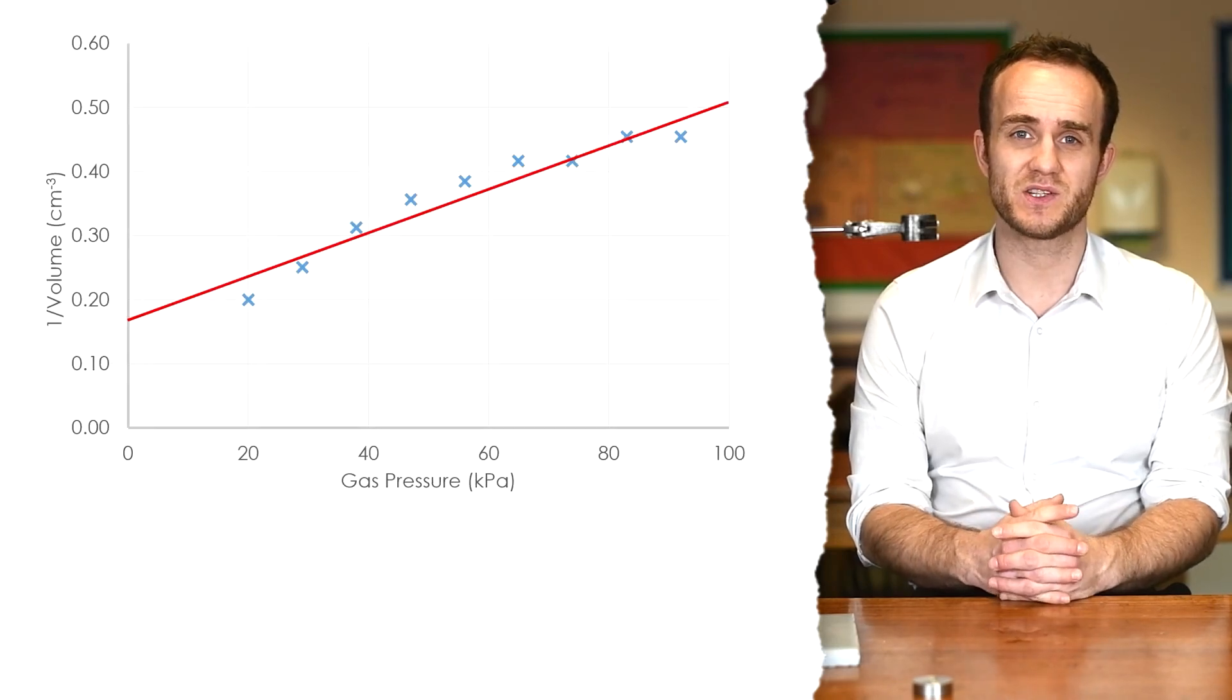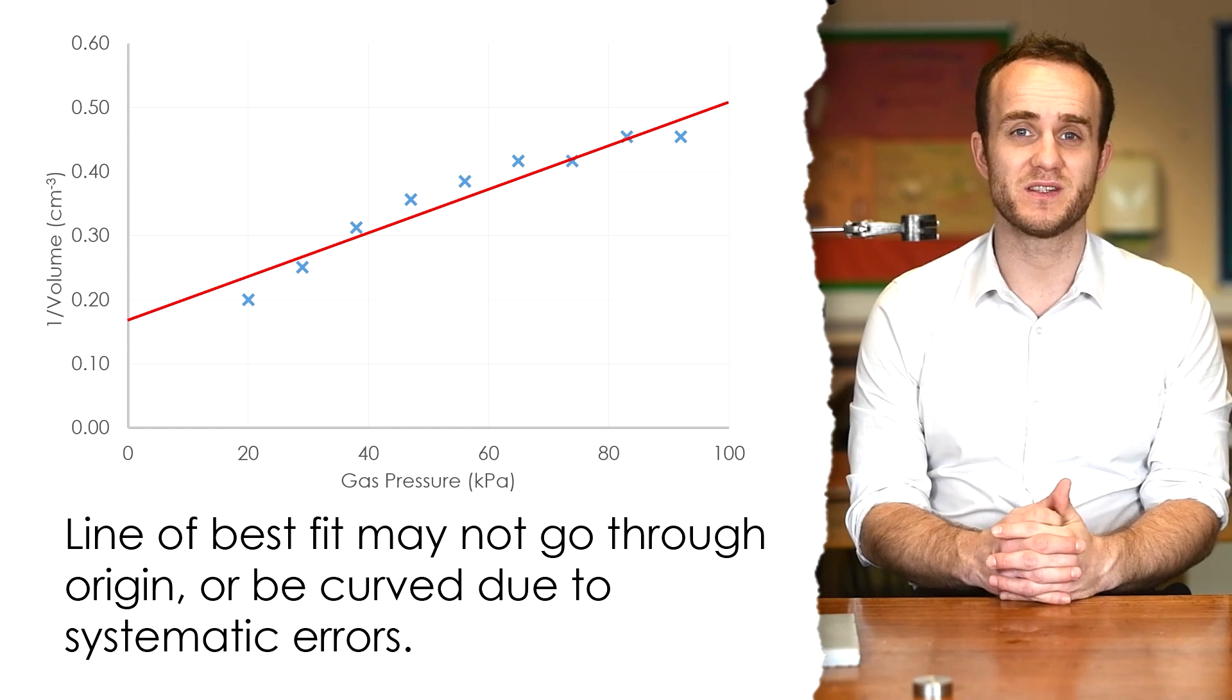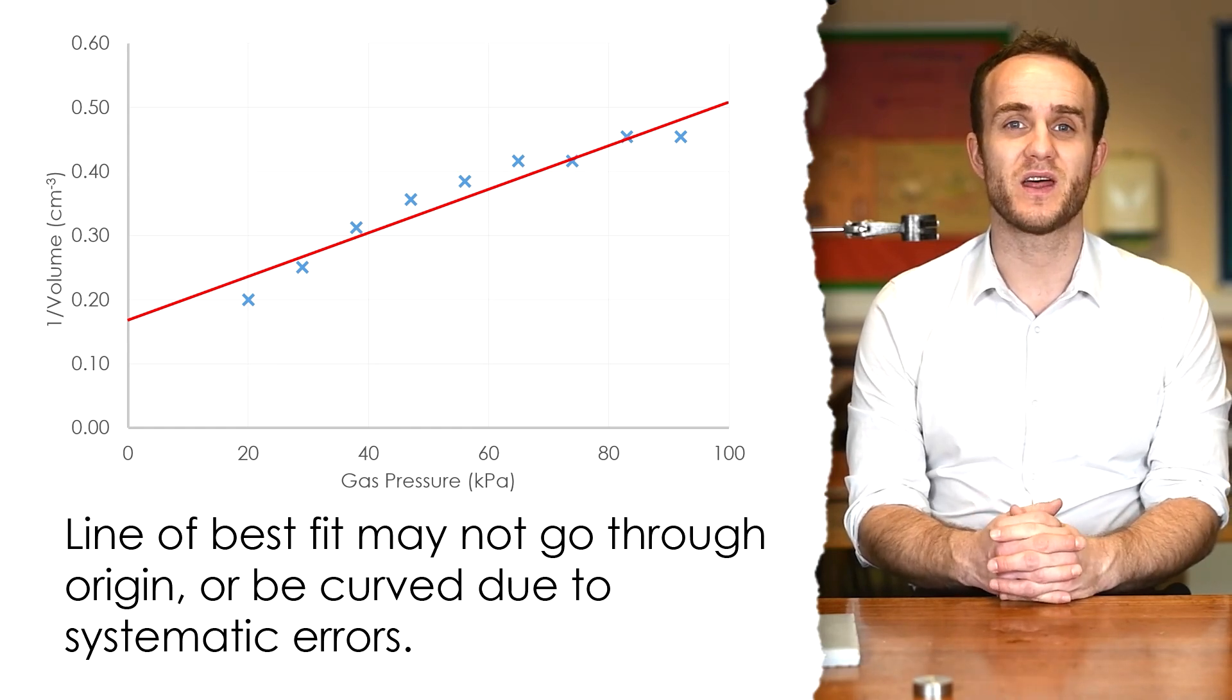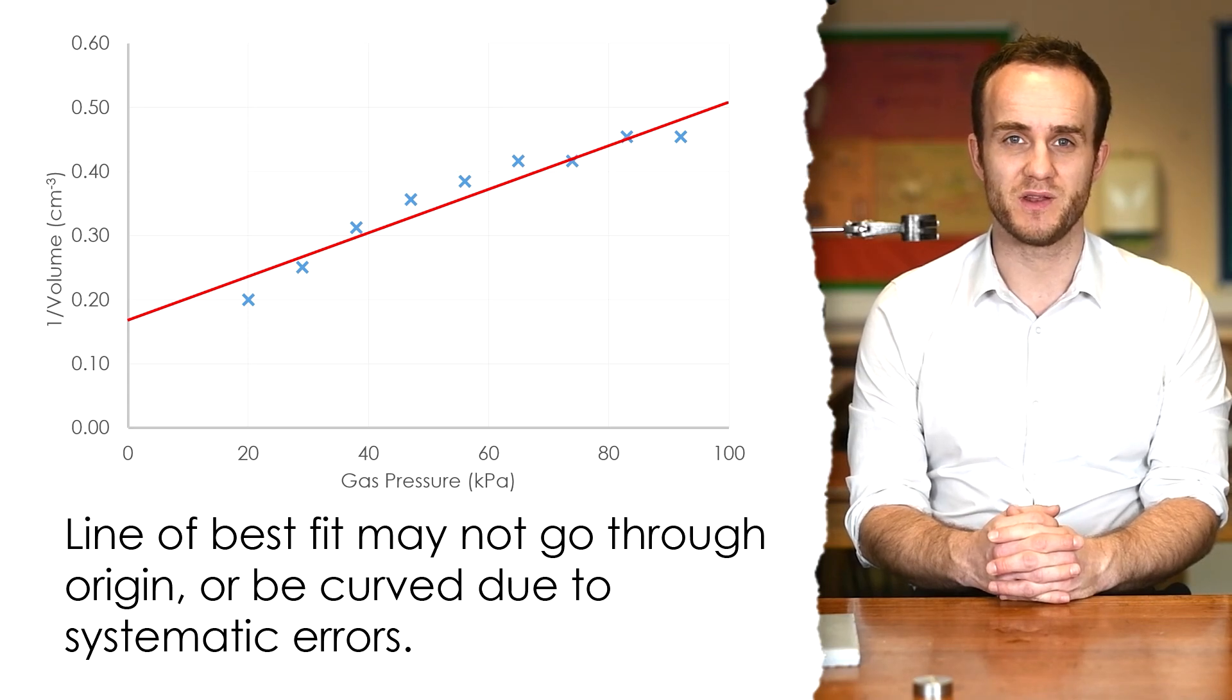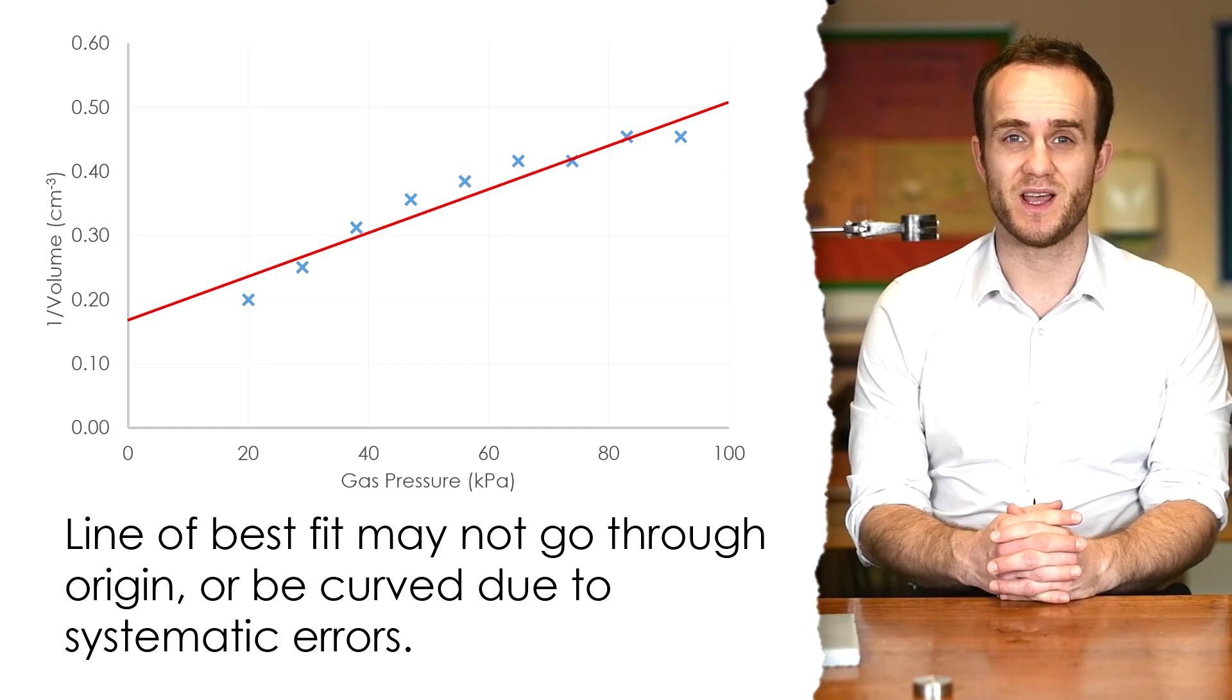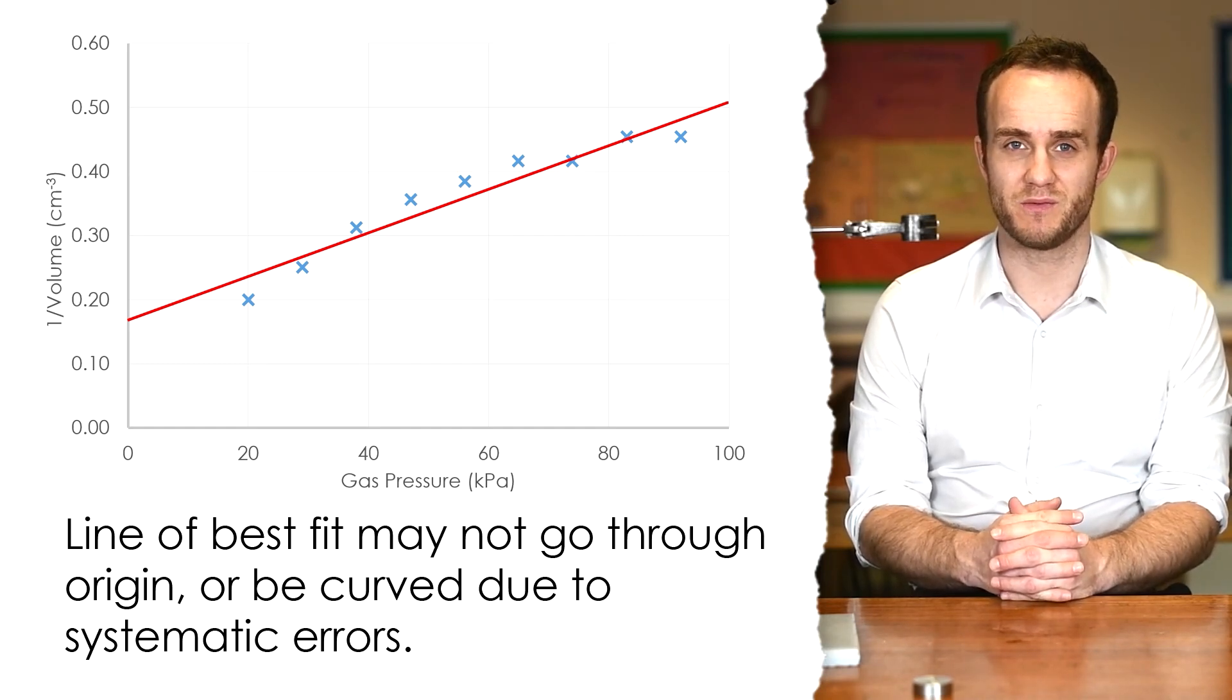As you can see, I have a fairly straight line, but it's been shifted upwards, so that means that I have a systematic error here somewhere. I'm going to guess that that is due to the friction of the plunger. So, if I was to do this experiment again, I'd try and find a syringe that has very little friction, to make sure that the only force involved is from the weight pulling downwards.